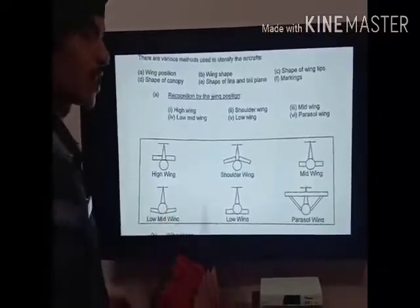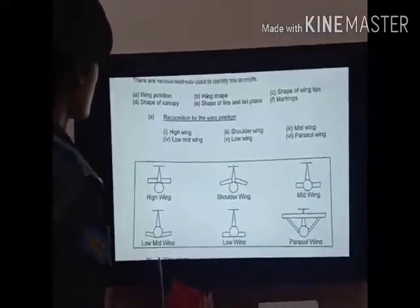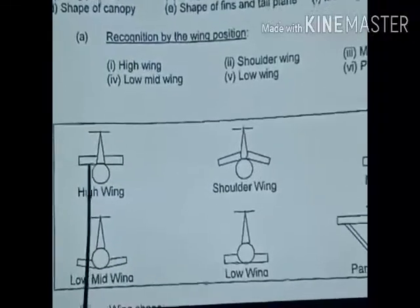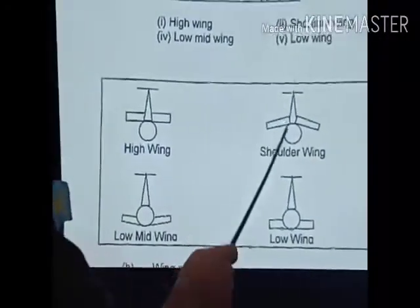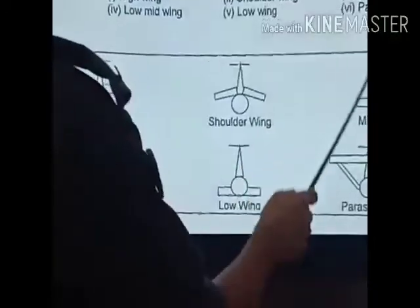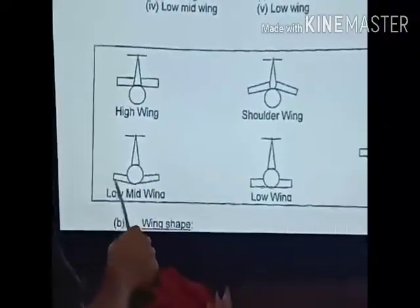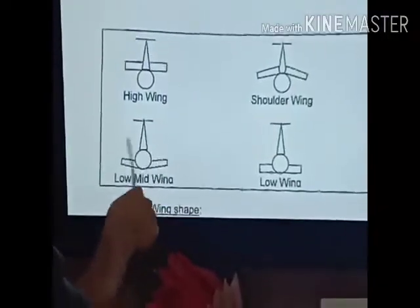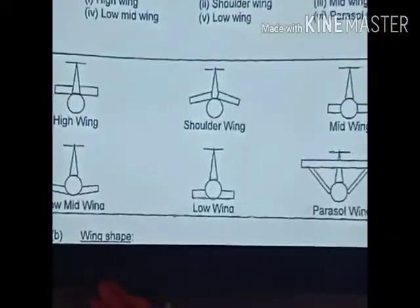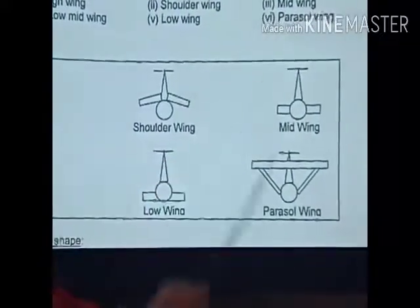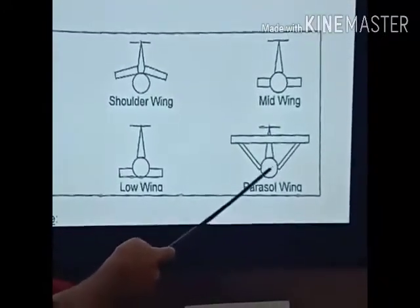First, we discuss recognition by wing position. Wing positions are of six types: first is high wing, where the wings are very high in relation to the body of the aircraft; second is shoulder wing; third is mid wing, which comes somewhere in the middle; fourth is low mid wing, which is below mid wing; fifth is low wing, completely located very low to the main body; and sixth is parasol wing, which is like a high wing but supported by the main body using external arrangements.